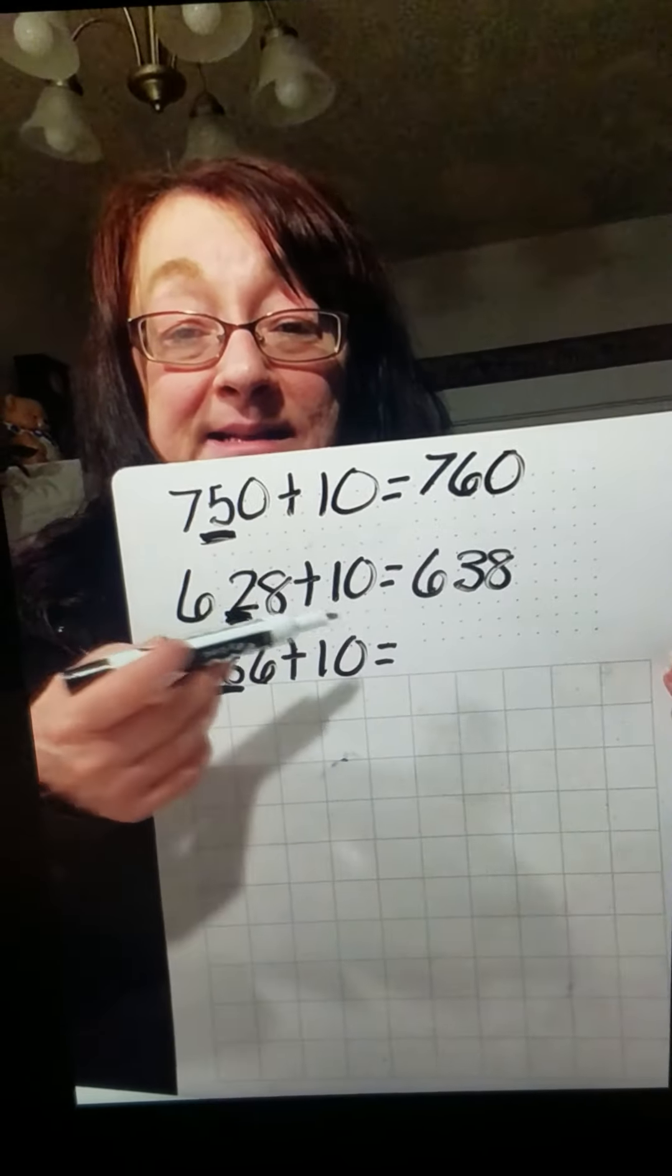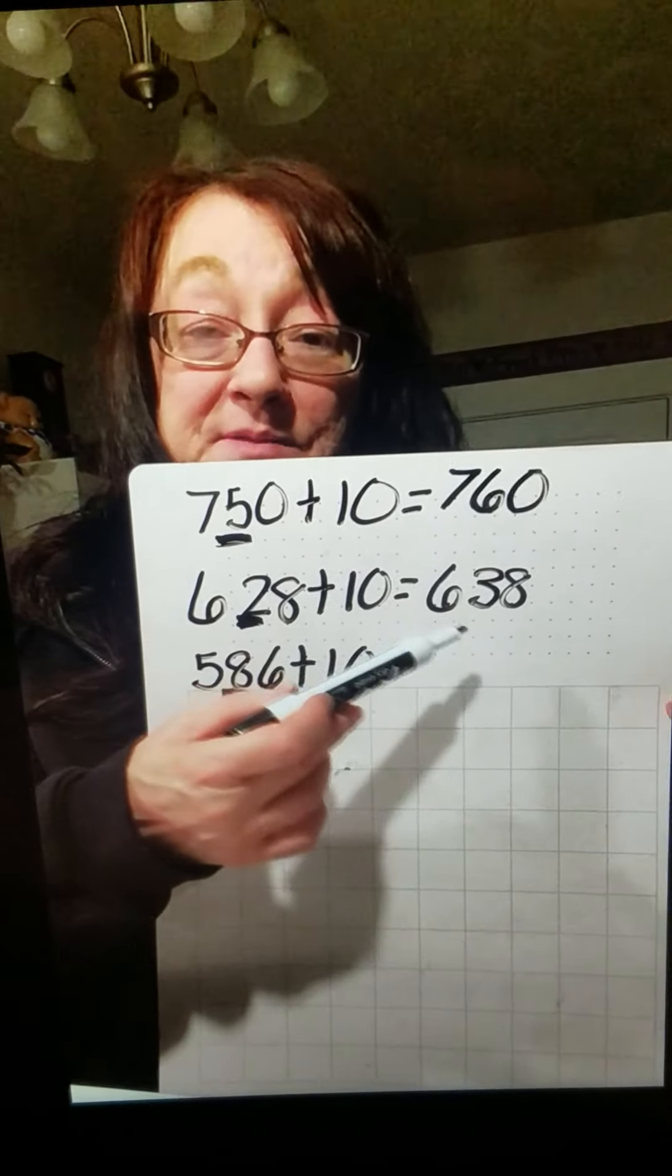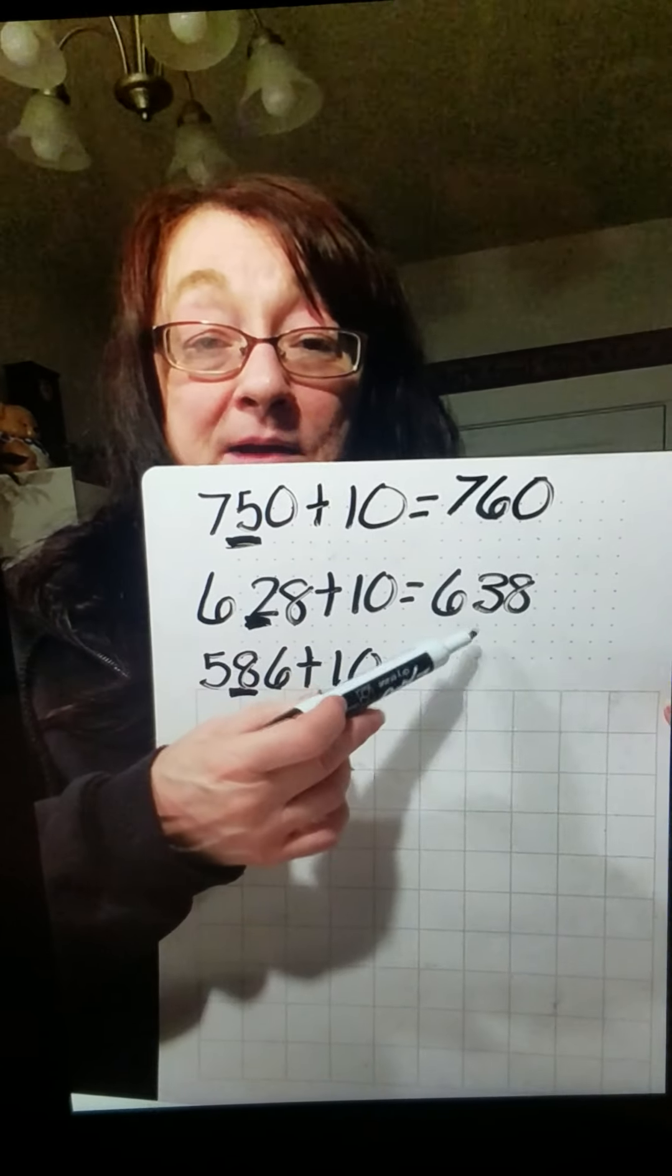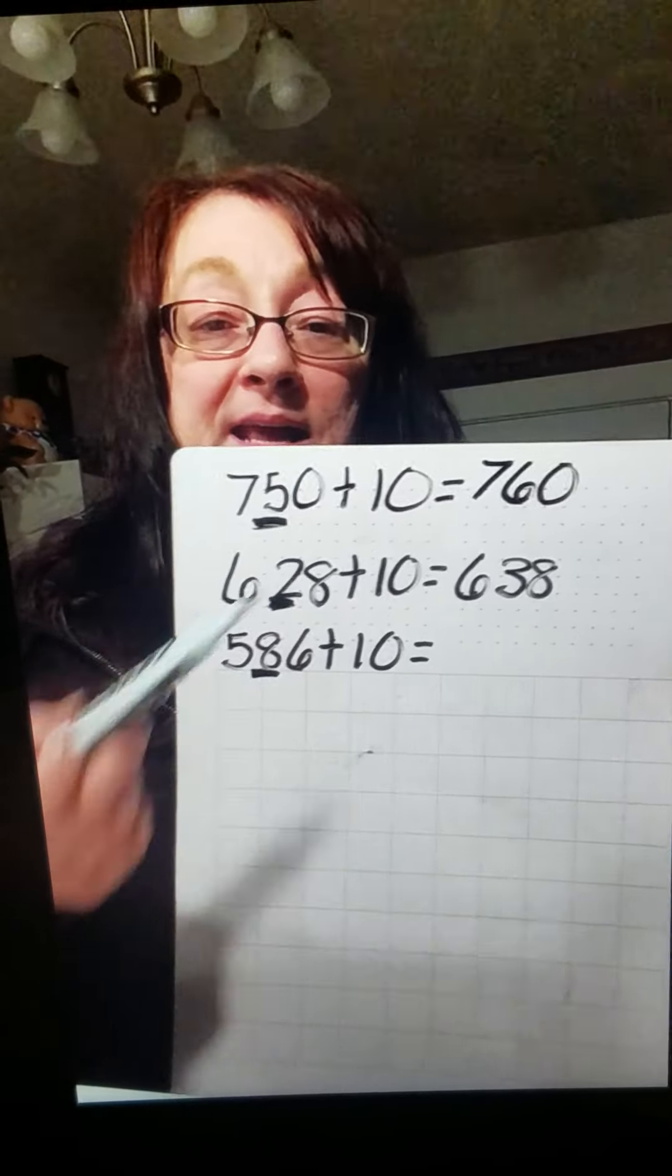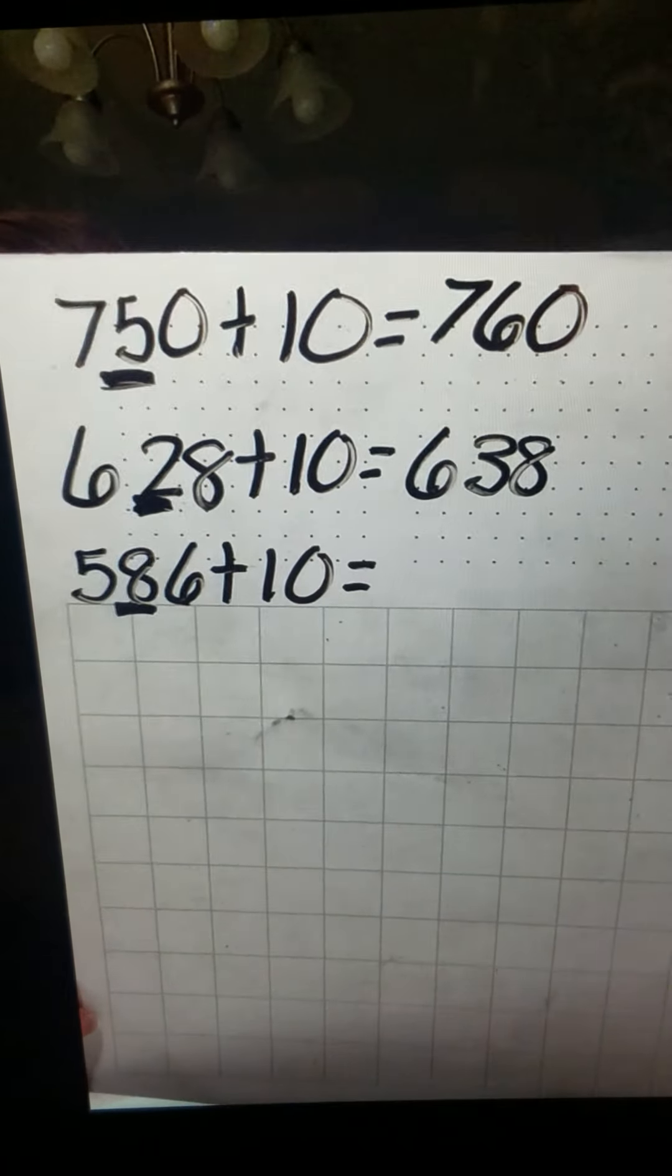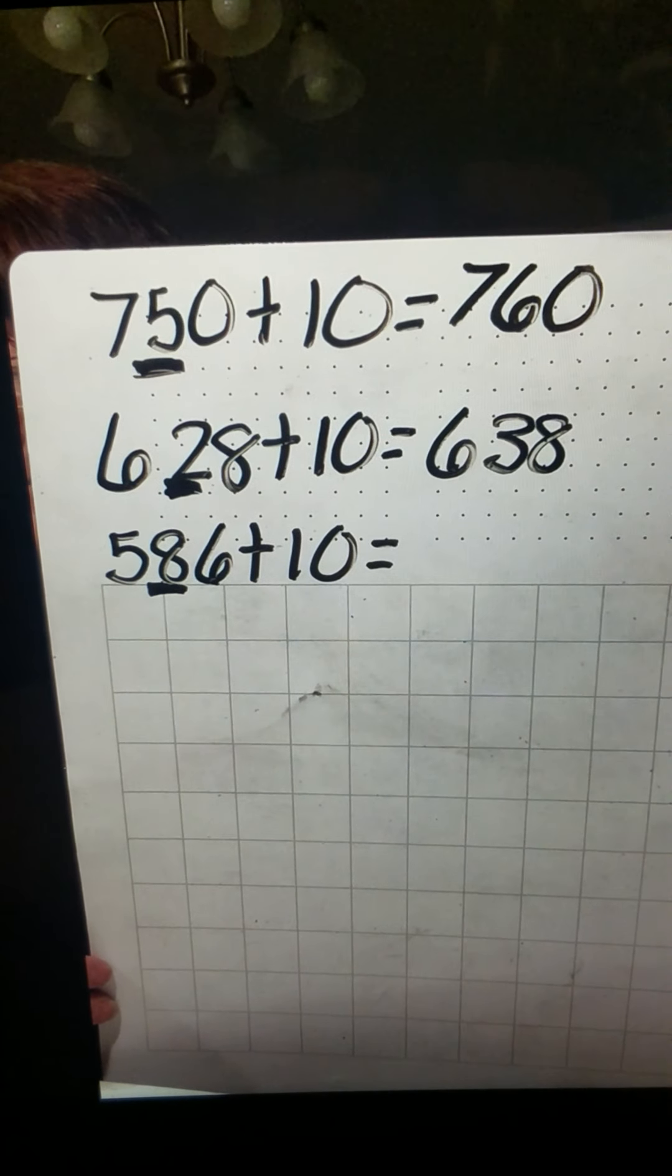See how you just added that 10, that group of 10 to the 2 that were already there? That brought it up to 3 groups of 10, which is 30. Three groups of 10 now would be 638. Okay, the next one.